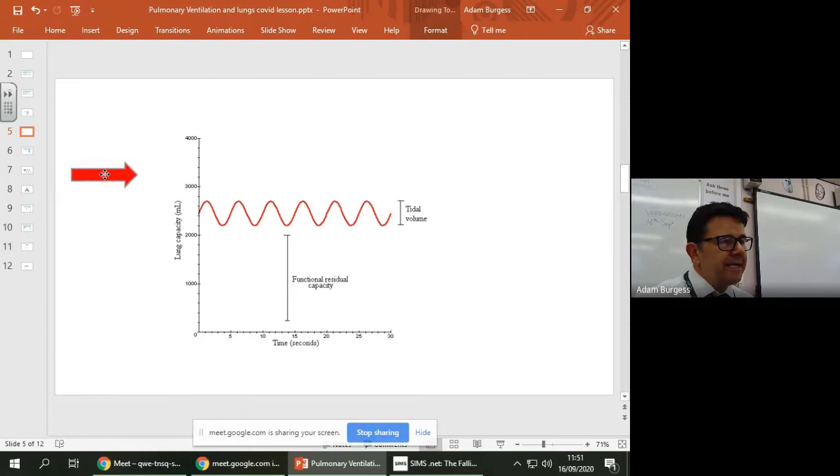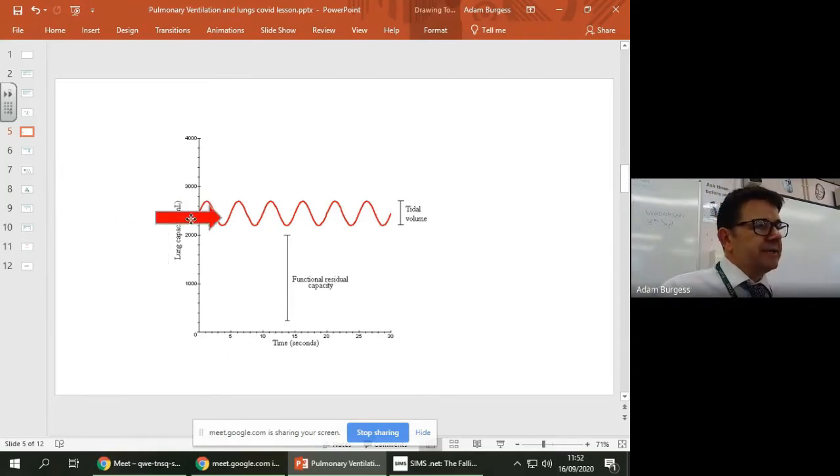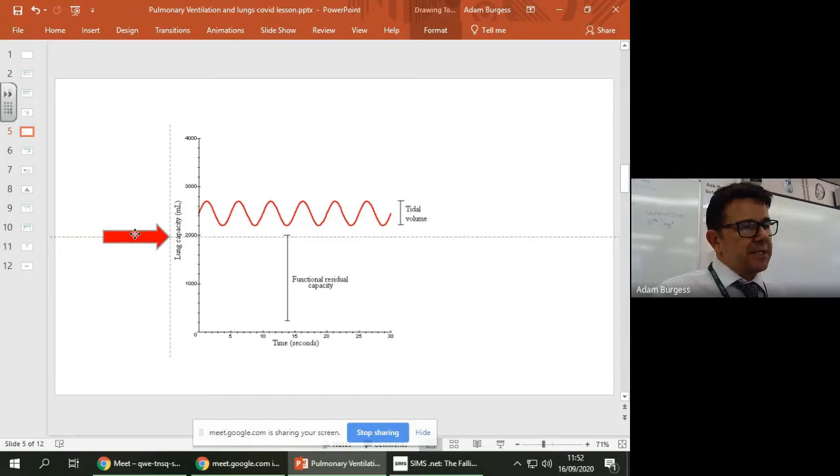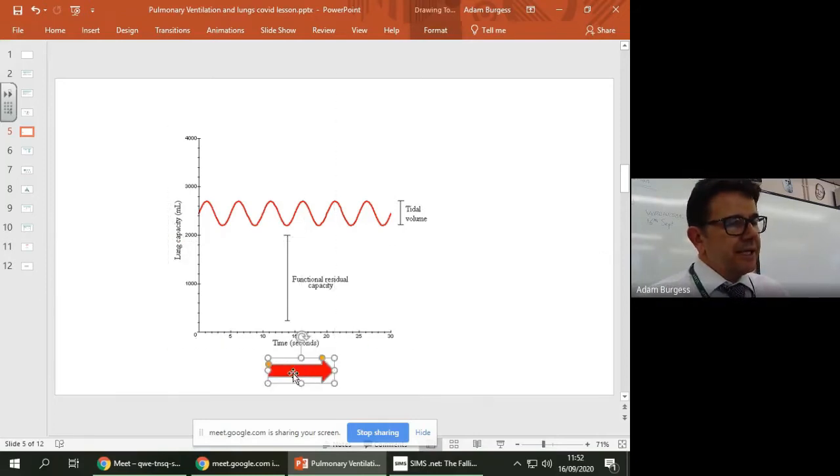So what you've got here is someone breathing in and out, okay, and you get a trace, it's going up and down, up and down, up and down. Okay, and you can see the lung capacity and here we've got what we call a functional residual capacity, all right, so it kind of stays constant and that's the amount of air in your lungs that stays constant.